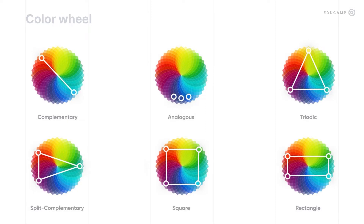For example, you can take complementary colors — those that are opposite on the color wheel, like blue and yellow. Such colors have the biggest color contrast. Or you can take analogous colors. These colors are close to each other on the color wheel.